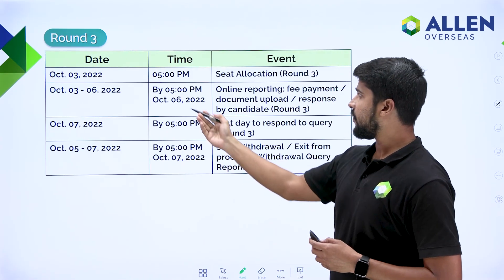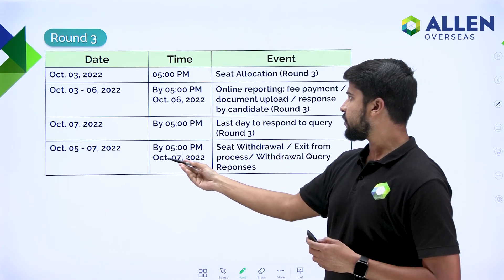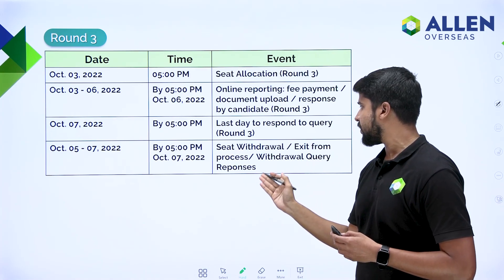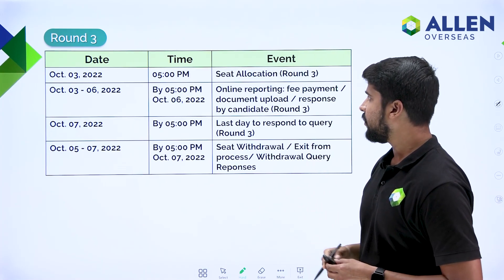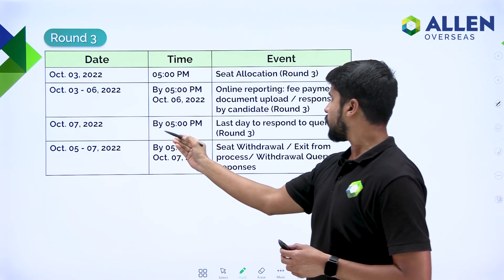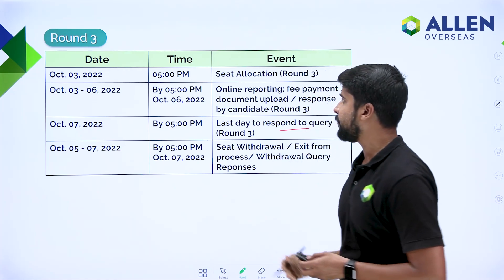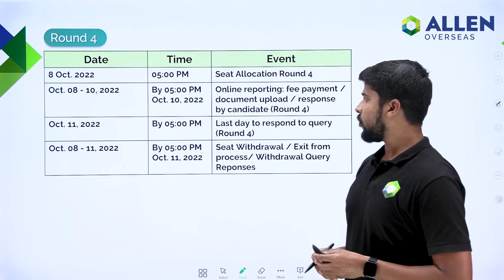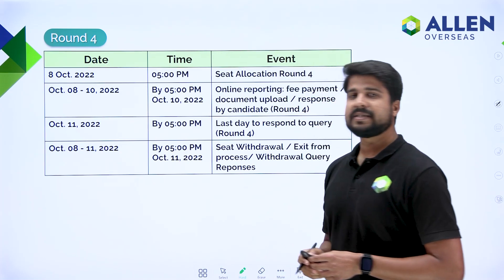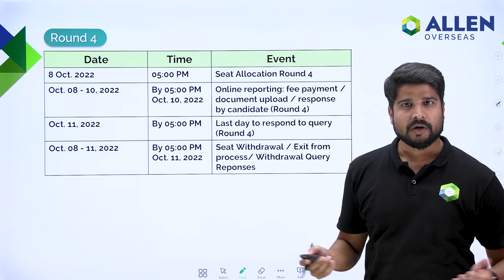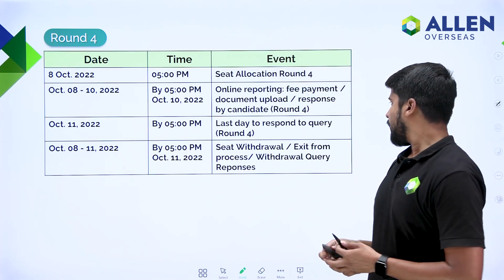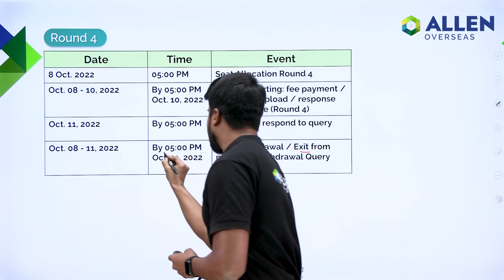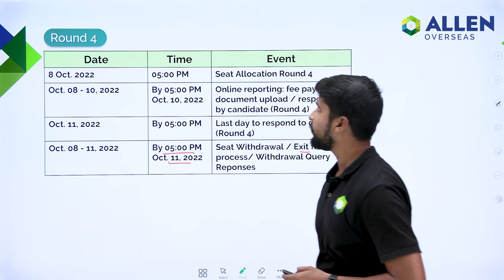Round 3 will start from 3rd October. From 5th to 7th October, seat withdrawal, exit from process, and query response can be done, with 7th October as the last day to respond to queries. Round 4 will start from 8th October, and from 8th to 11th October, seat withdrawal, query responses, and exit from process can be done by 5 pm on 11th October.